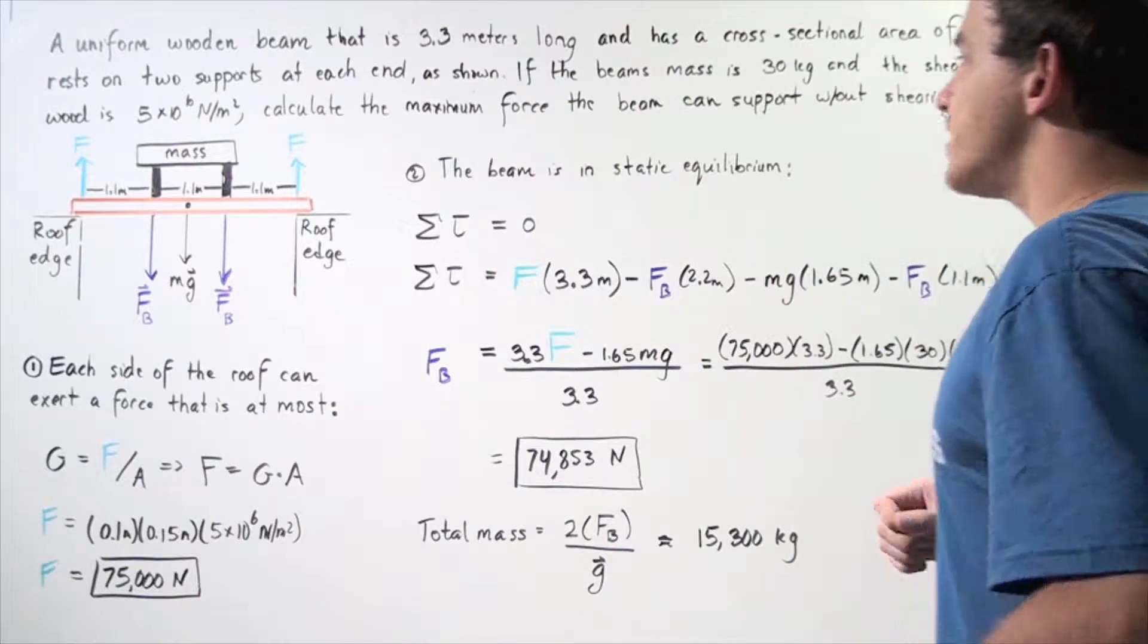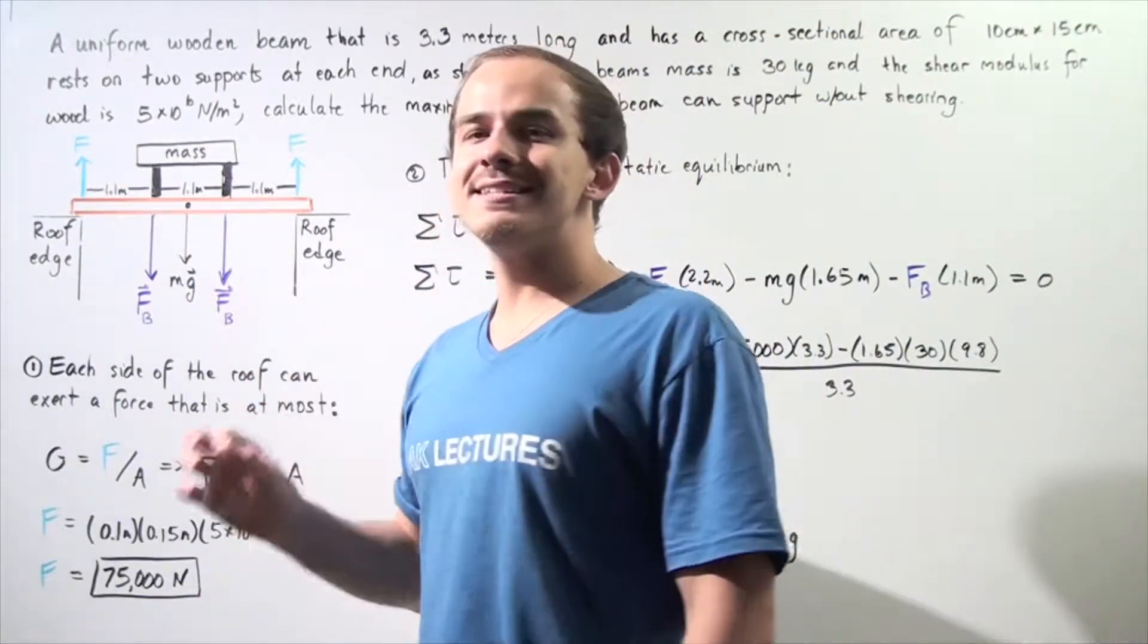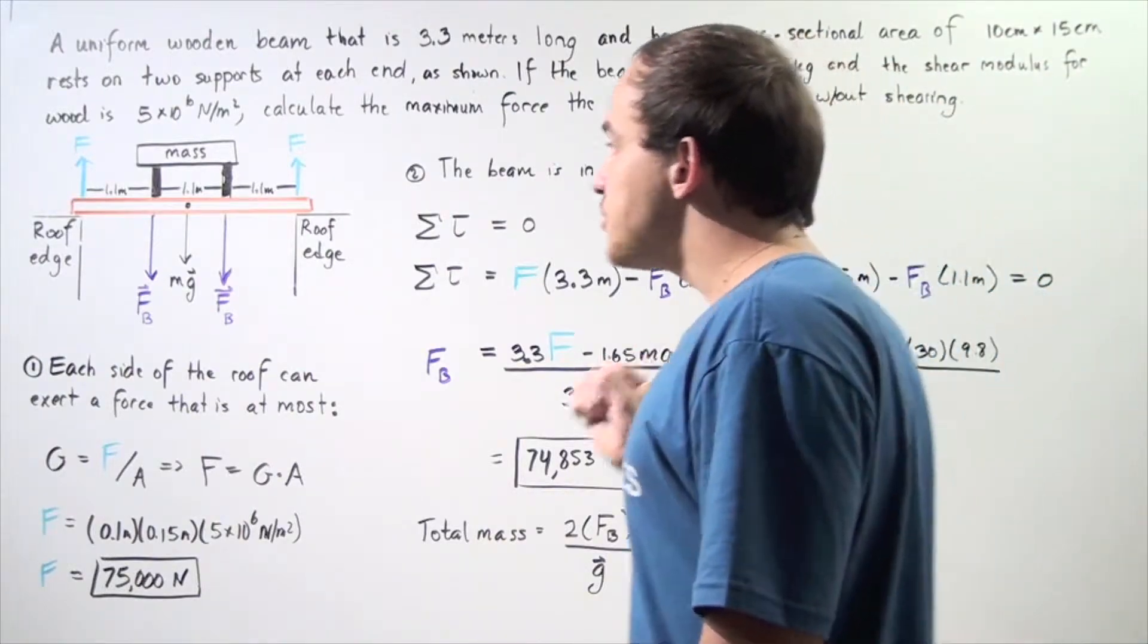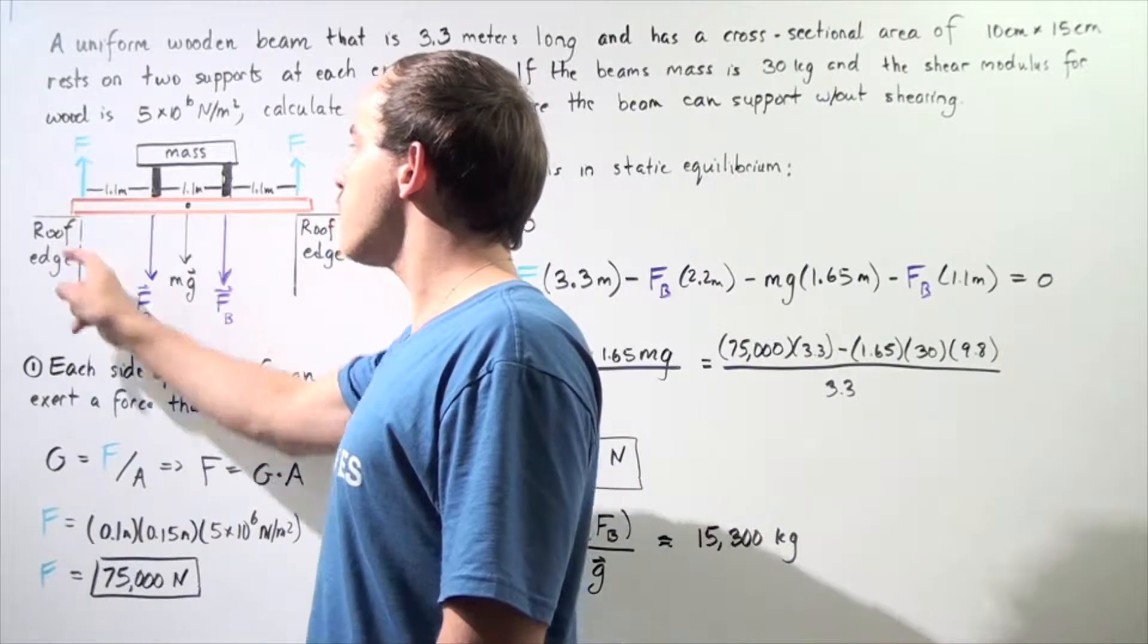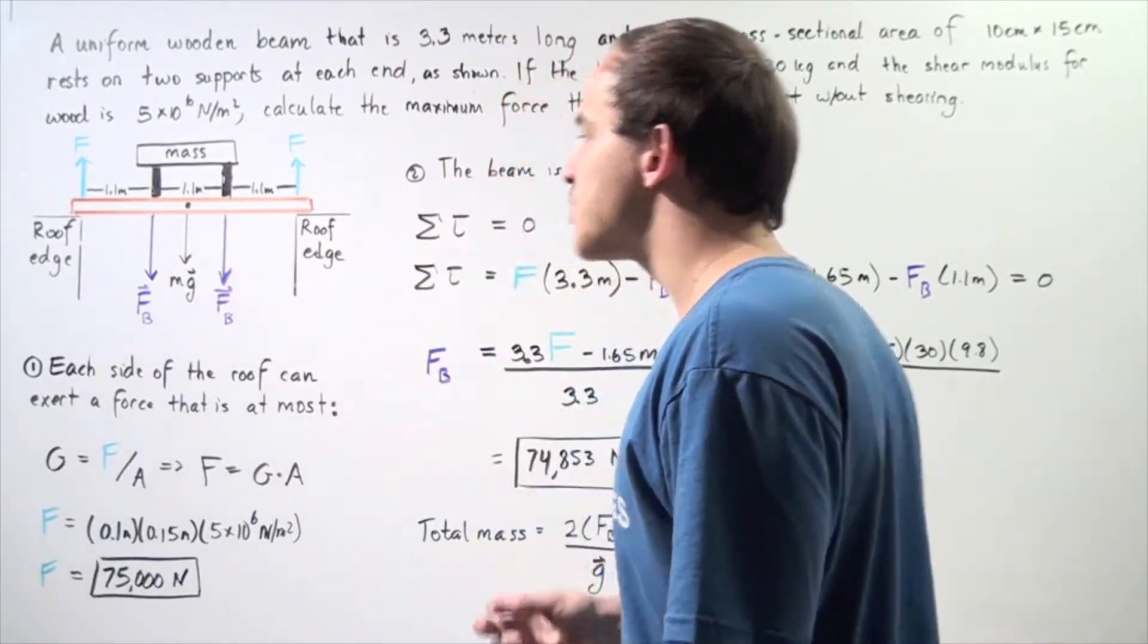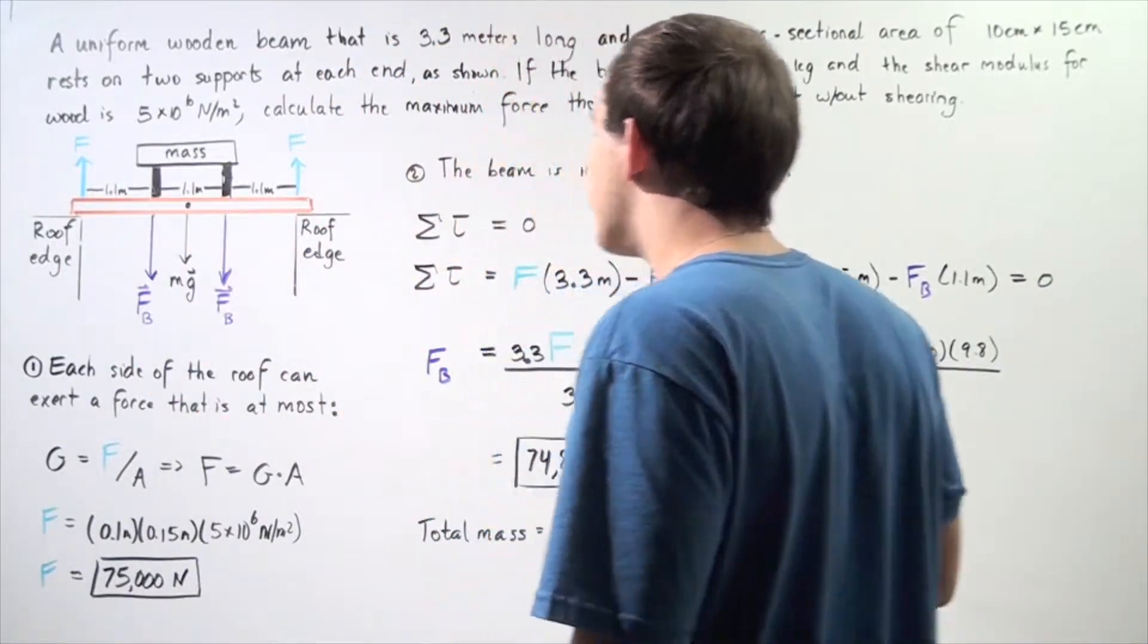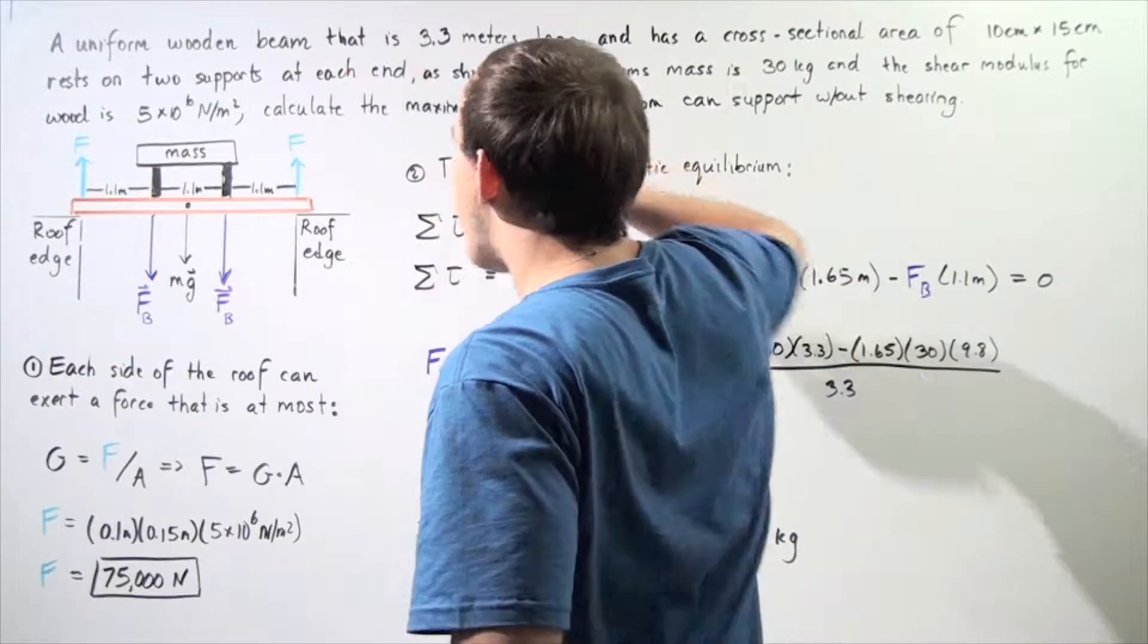Now, let's go to step two. In step two, we're going to use the fact that our beam is in static equilibrium. That means the net torque acting on the beam is 0. So, we choose our axis of rotation to be the left edge of the beam. So, that means we have one, two, three, four torques that are created. We choose going counterclockwise to be positive and clockwise to be negative. So, that means we have three negative torques and one positive torque.